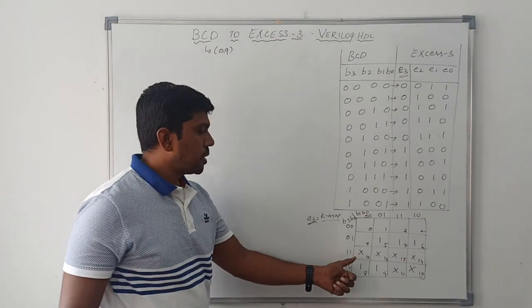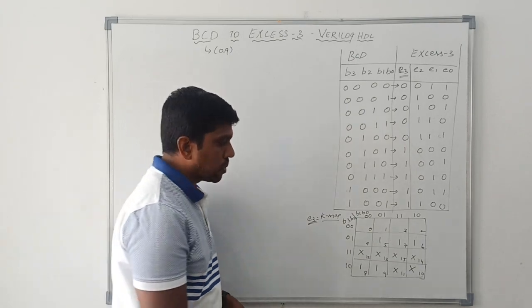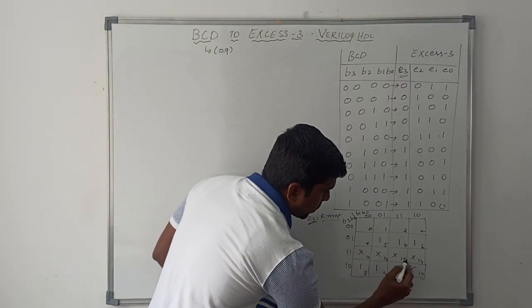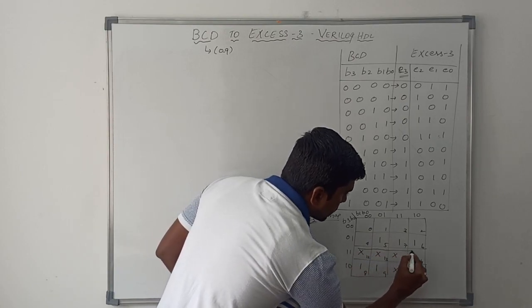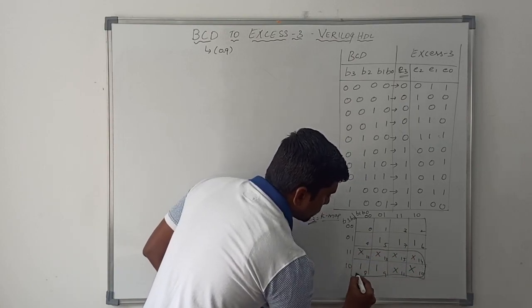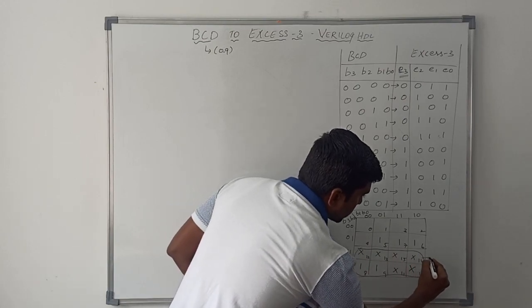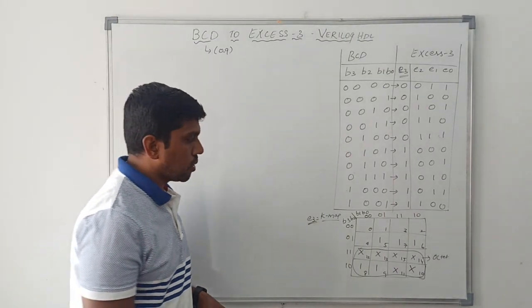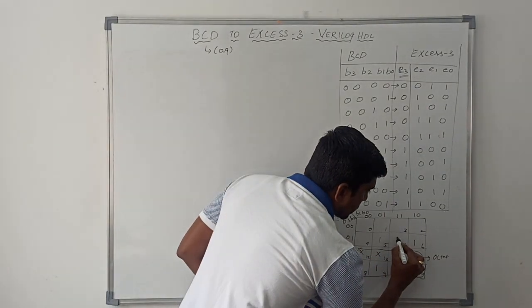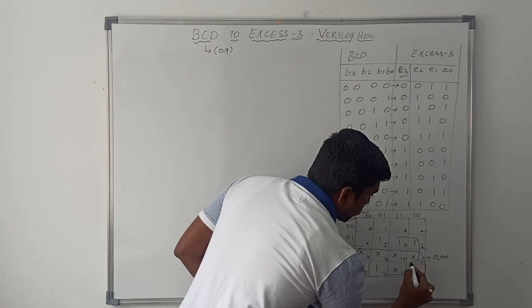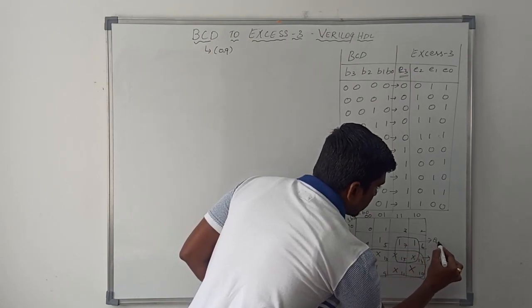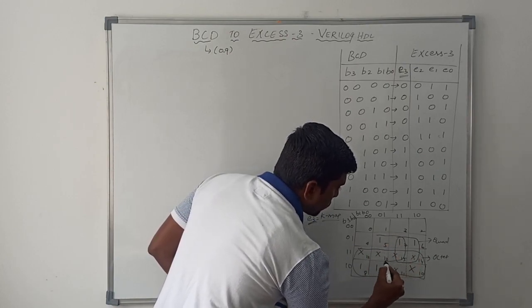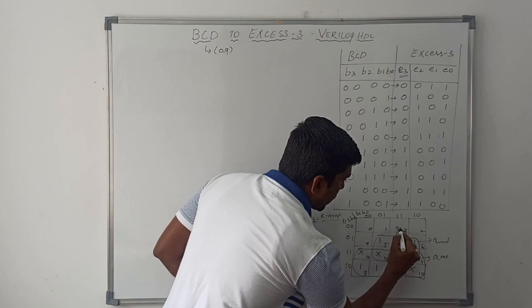After putting the don't care values, verify the grouping possibility. Here cell numbers 8, 9, 11, 10, 14, 15, 13, 12 — these 8 cells make one octet. Then cell numbers 7, 6, 14, 15 make one quad. Then cell numbers 5, 7, 15, 13 make another quad.